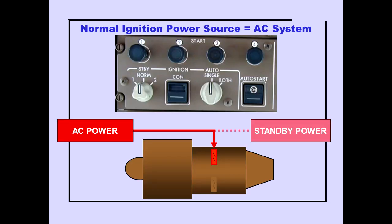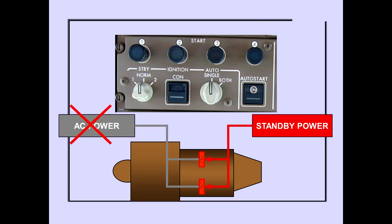The normal position of the standby ignition selector selects the AC power system as the power source for the selected igniter. If the AC power system is not powered when the standby ignition selector is in normal, the standby power system supplies power continuously for ignition. During this condition, both igniters are powered.